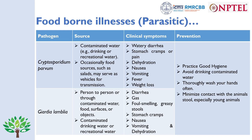Cryptosporidium parvum spreads through contaminated water used for drinking or recreational purposes such as swimming pools, and occasionally through food sources like salads. Symptoms include watery diarrhea, stomach cramps, dehydration, nausea, vomiting, fever, and weight loss. Giardia lamblia spreads person-to-person or through contaminated water, food, surfaces, or objects. Symptoms include diarrhea, gas, foul-smelling greasy stools, stomach cramps, nausea, vomiting, and dehydration. Prevention for both includes maintaining good hygiene, avoiding contaminated water, thorough and frequent handwashing, and minimizing contact with animal stool — especially from young animals.